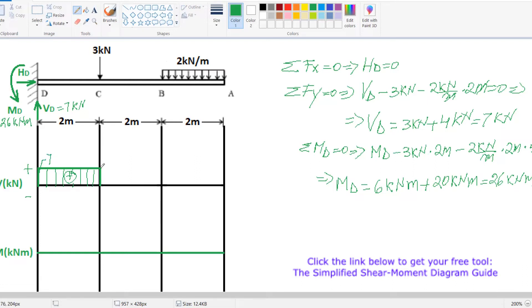Now from 7 at this point, I have 3 kN going downwards. That means I will land at 4 kN. In this section we don't have any other loads, so my diagram will be constant at 4 kN.